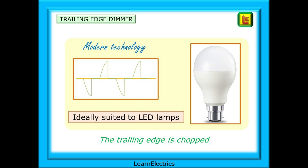Trailing-edge dimmers work by cutting off the trailing edge of each half cycle. Starting from zero volts, the voltage steadily increases, and this makes them ideal for LED lamps. The technology to make LED lamps dimmable relies on some of the components being built into the dimmer switch, and the rest of the components being built into the base of the LED lamp, which is why we must have a correct pairing of dimmable LED lamps and LED dimmer switches to make them work properly together.